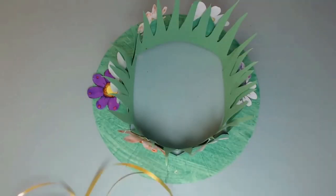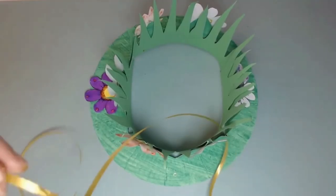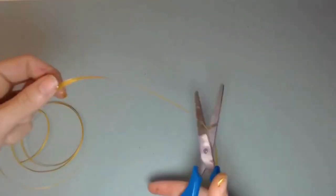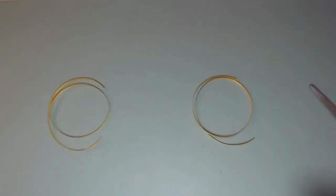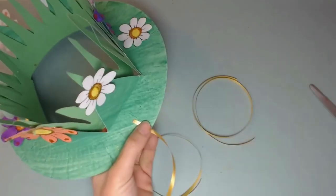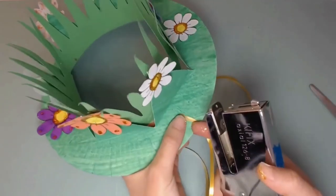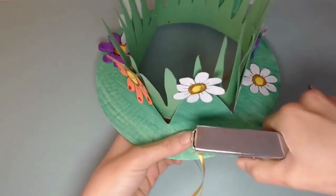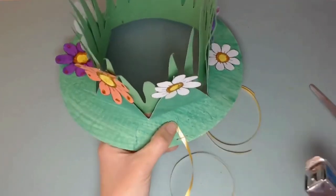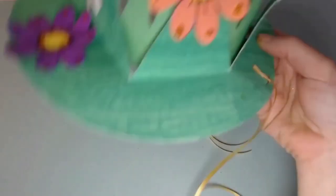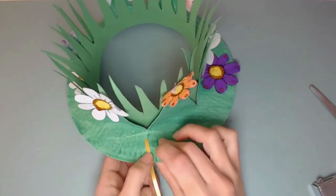Here's the last step. Take your ribbon and cut it into two equal pieces. Make sure it's long enough to fit around your chin. Next, you're going to staple the ribbon to your hat. Be very careful not to hurt yourself, and make sure you staple on the ribbon so it stays on your hat.